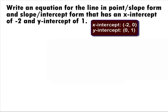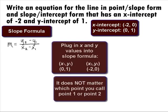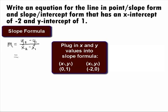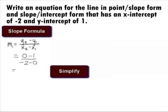Since we are given two points, we can find the slope by using the slope formula: m equals y2 minus y1 over x2 minus x1. It doesn't matter which points you label as point 1 and point 2 as long as you are consistent throughout the whole slope formula. Let's call (0,1) point 1 and (-2,0) point 2. Plugging those values in, we get 0 minus 1 over negative 2 minus 0, which equals negative 1 over negative 2, which simplifies to 1 half.